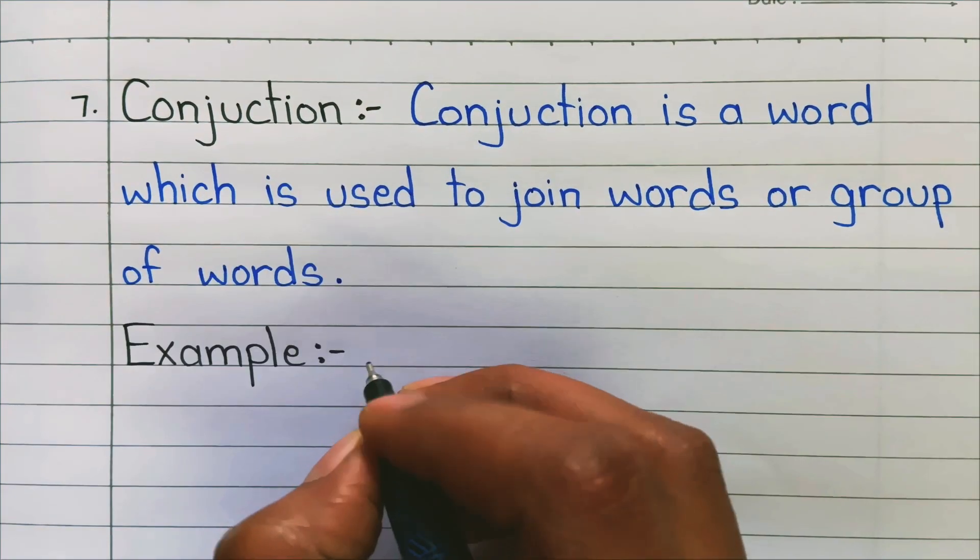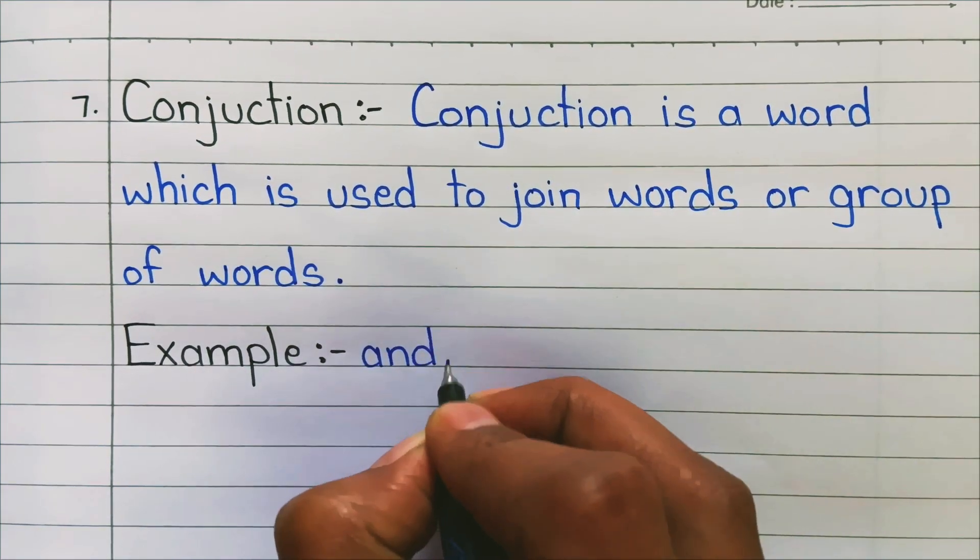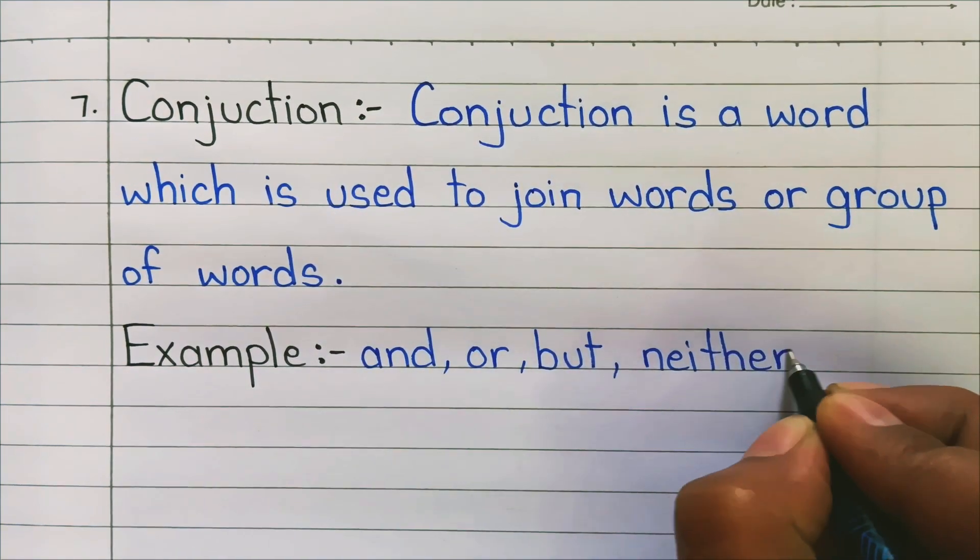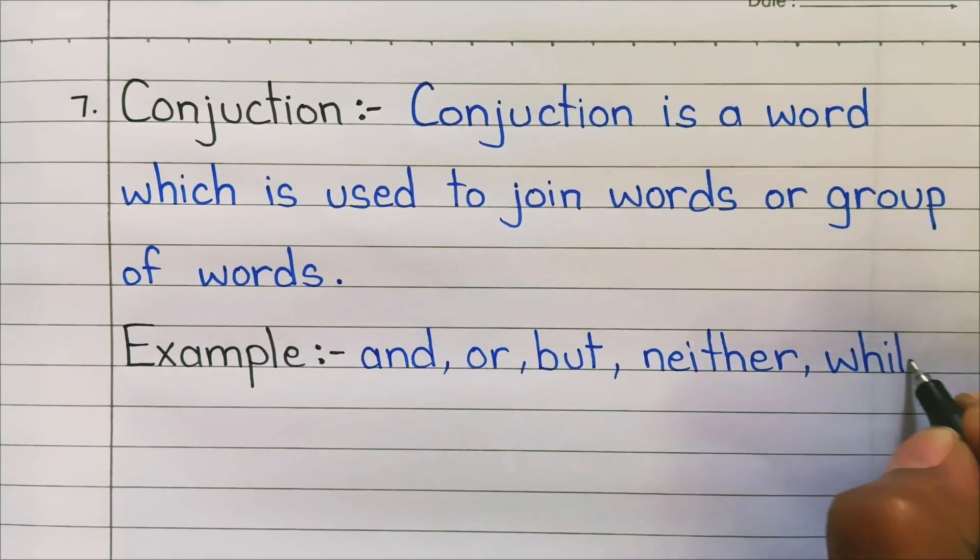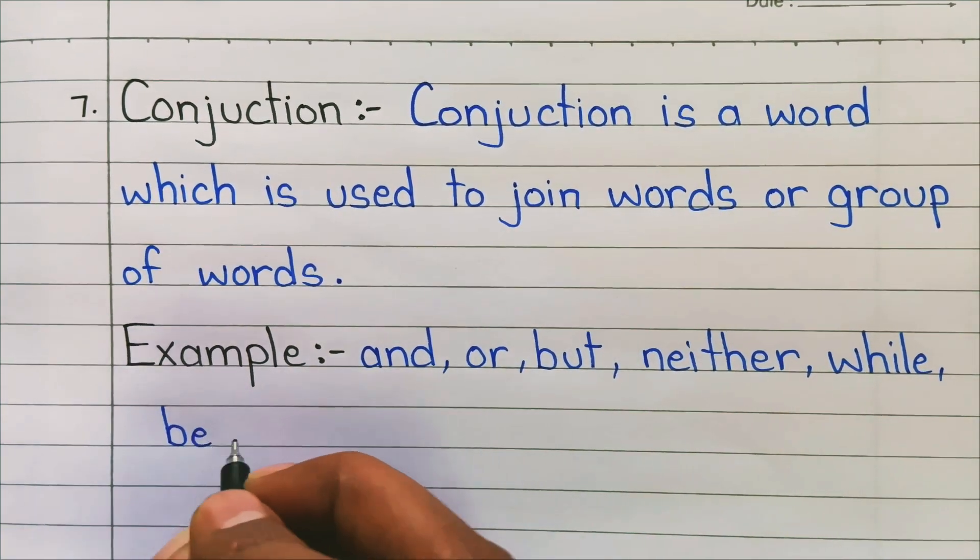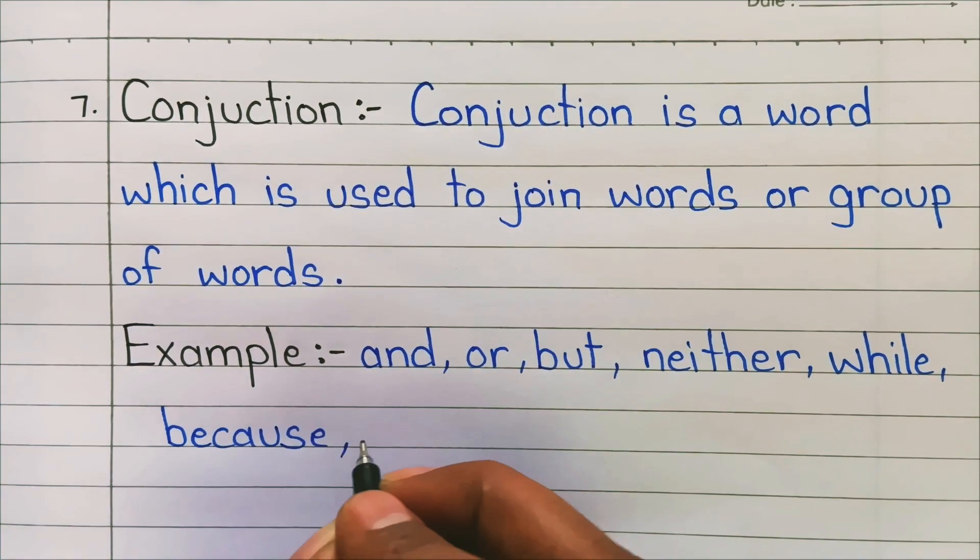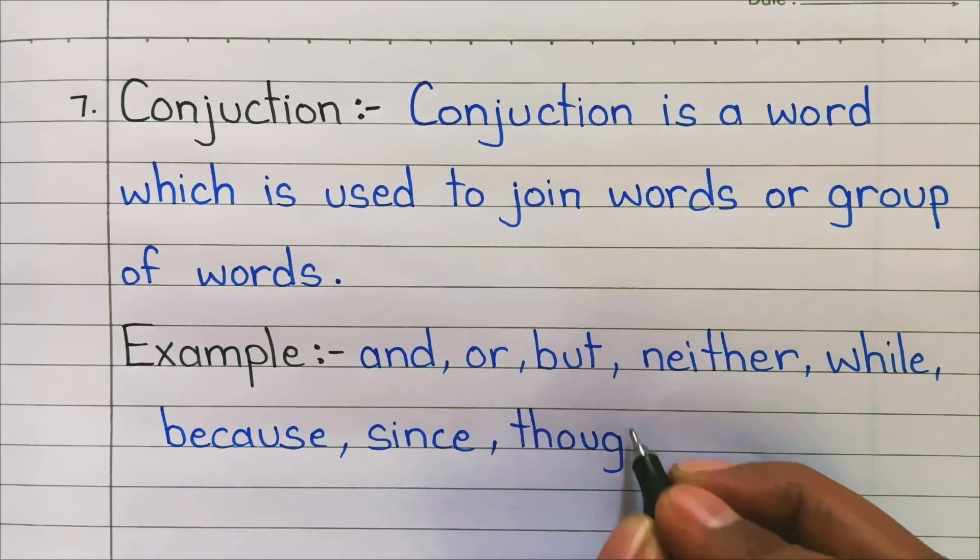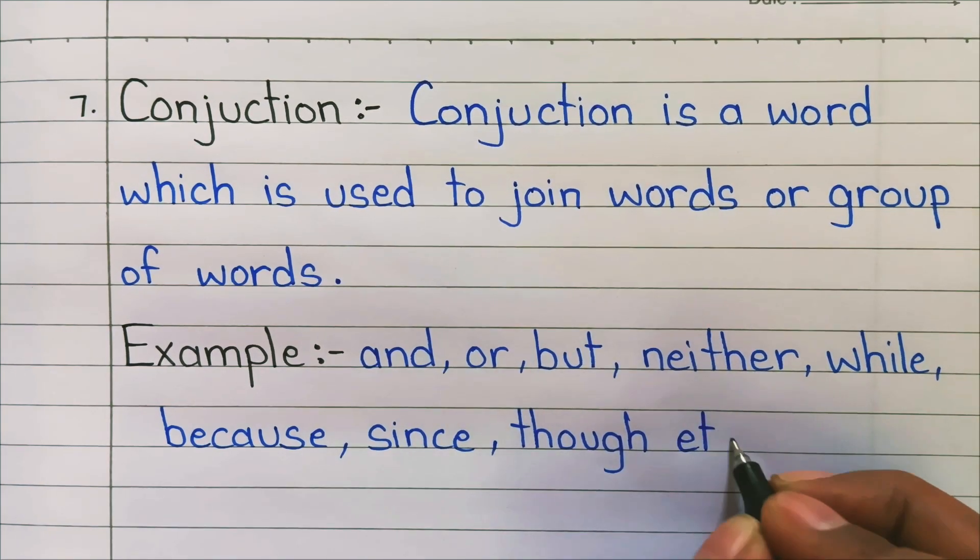7. Conjunction: Conjunction is a word which is used to join words or group of words. Examples: and, or, but, neither, while, because, since, though, etc.